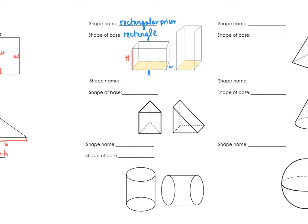The next shape is called a triangular prism, and the base is a triangle. Even if the prism is on its side, the base is still just the triangle — it's not necessarily the bottom. The dimensions of the base are base and height (lowercase). The third dimension is the height of the prism, which I use a capital H to describe — it's how far back the shape goes, meaning how many stacked triangles we have.